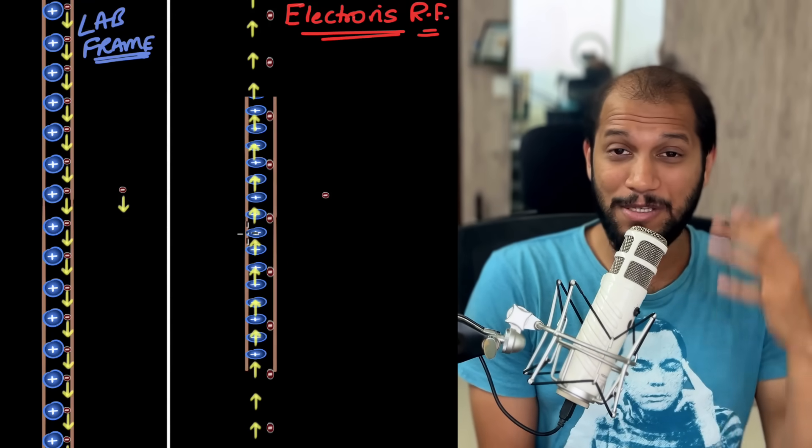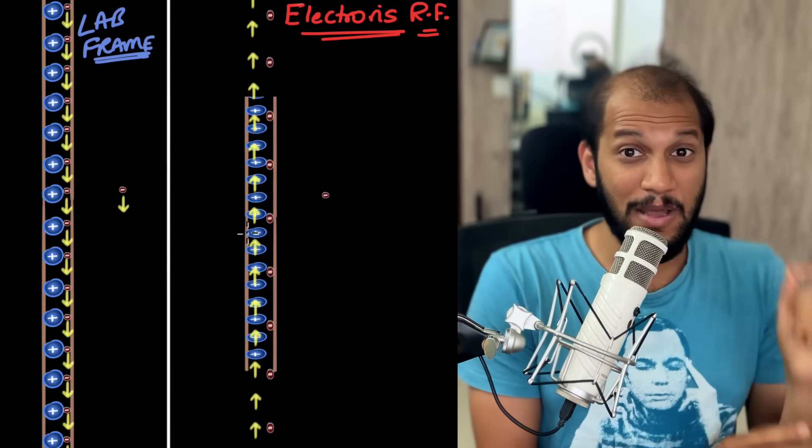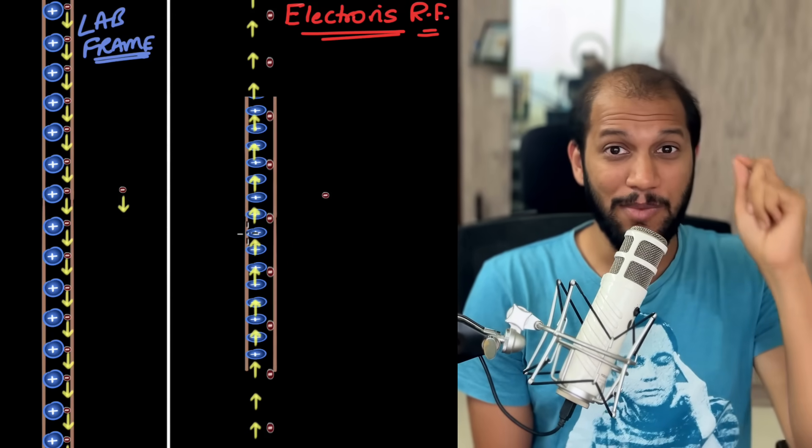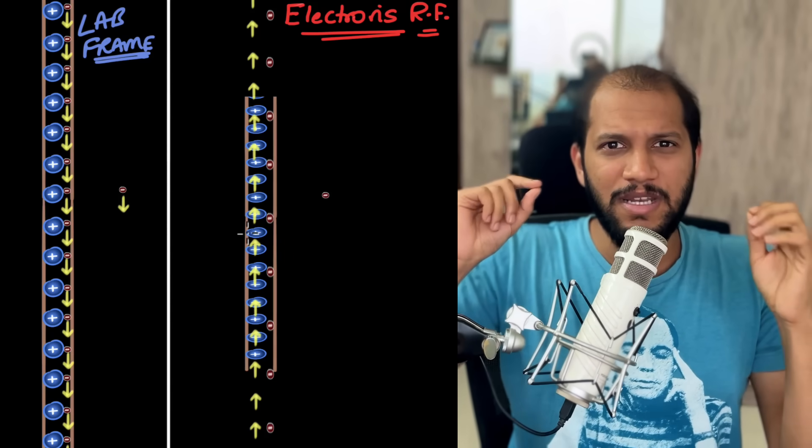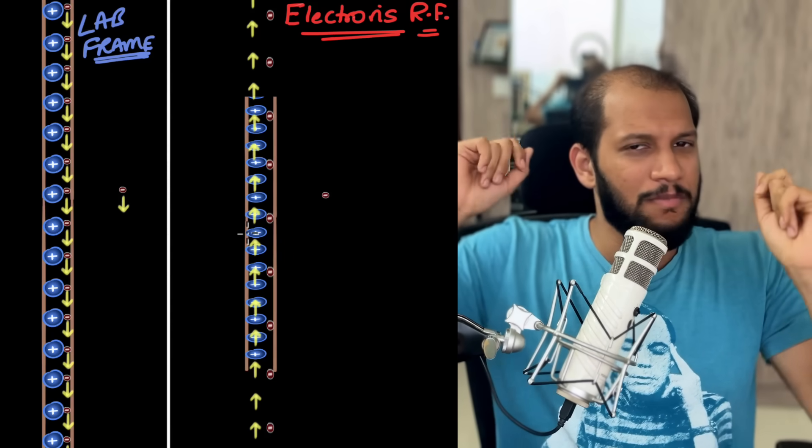We're not done here. This is an example you'd see in most places, but I want to take one more. I had a third question: this explains why a current carrying wire behaves like a magnet, but what about a single moving charge? Why does a single moving charge produce a magnetic field?